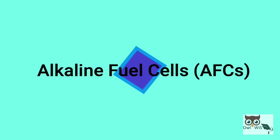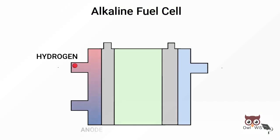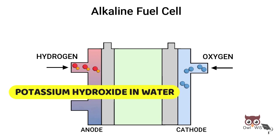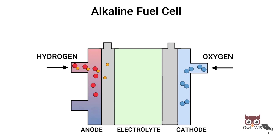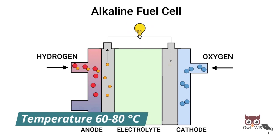Let us start with alkaline fuel cells, AFCs. Hydrogen and oxygen gas are bubbled into the electrolyte through a porous carbon electrode. These fuel cells use a solution of potassium hydroxide in water as the electrolyte and use a variety of non-valuable metals as a catalyst at the anode and cathode. It operates usually at 60 to 80 degrees Celsius.